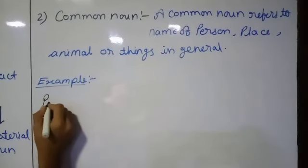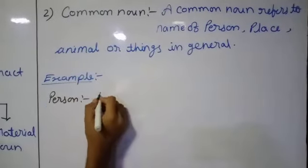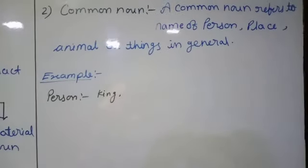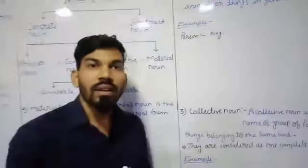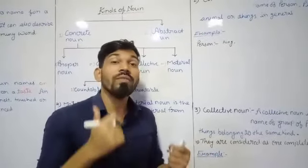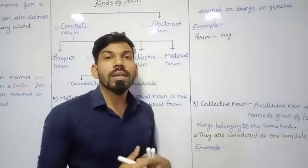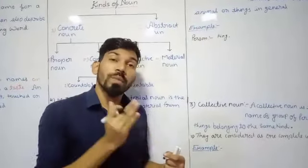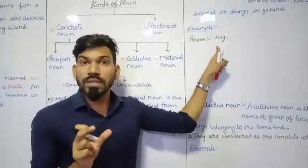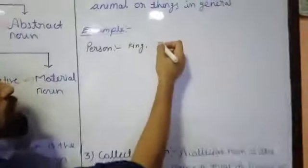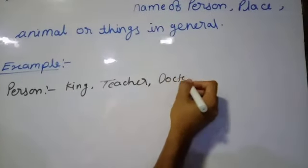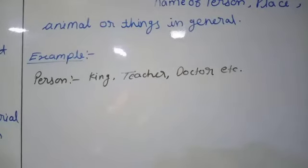Let's take examples. If I am talking about a king, the word 'king' is a common noun. Why? Because whenever we talk about kings, there are a lot of various kings — different kings in our history. If we are not talking about one specific king, like Akbar or Shivaji, then we are not particularly identifying a person. So 'king' is not a specific name of any person — it comes within a common noun. Similarly, teacher, doctor, etc. — these all are common nouns.